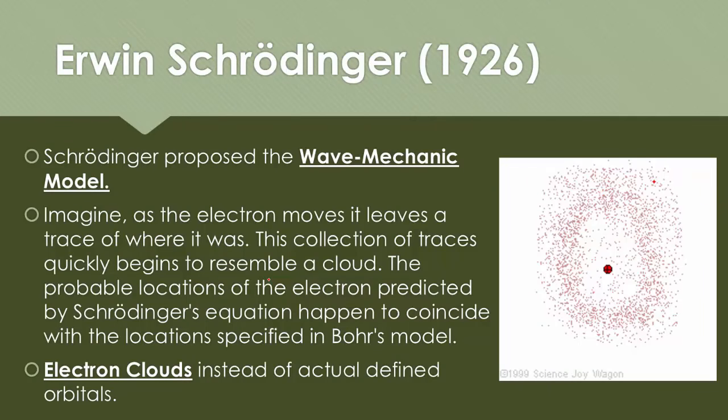Erwin Schrodinger proposed the wave mechanic model. Imagine as the electron moves, it leaves a trace of where it is, or where it was. This collection of traces quickly begins to resemble a cloud. If you look at the diagram out in the corner, you'll see that this electron is kind of just bouncing all over the place. The probable location of the electron predicted by Schrodinger's equation happened to coincide with the location specified in Bohr's model. We call them now, instead of shells in Bohr, now we call them clouds. This is what we call electron clouds instead of actual defined orbits.